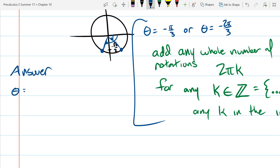like this: theta equals minus pi over 3 plus 2 pi k or theta equals negative 2 pi over 3 plus 2 pi k